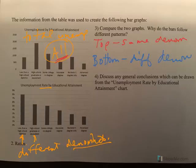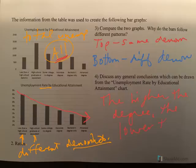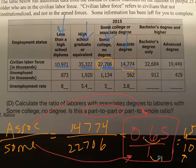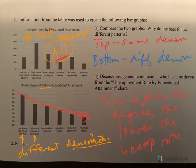Discuss any general conclusions. It looks as if the higher or more advanced the degree, the lower the unemployment rate. Also notice there are far fewer advanced degrees than bachelor's, some college, or high school equivalent. But still, it shows that the more advanced degree you have, the lower the unemployment rate. And that's part-to-part and part-to-whole.